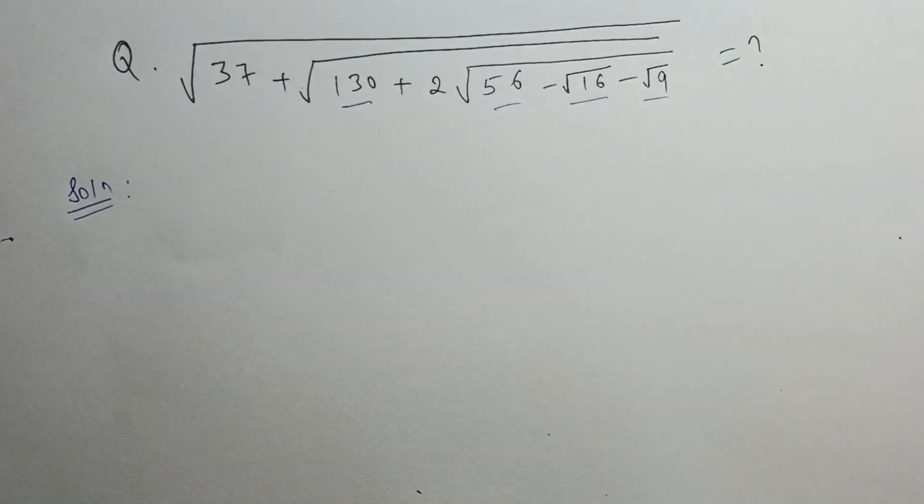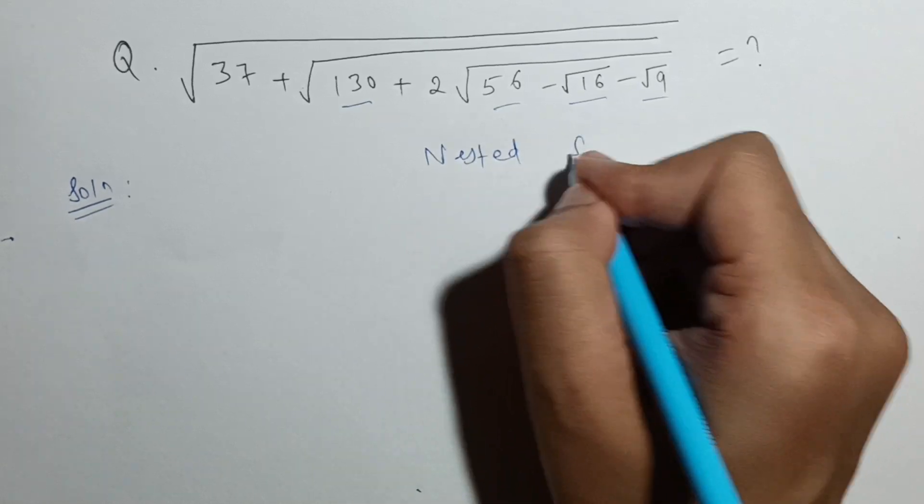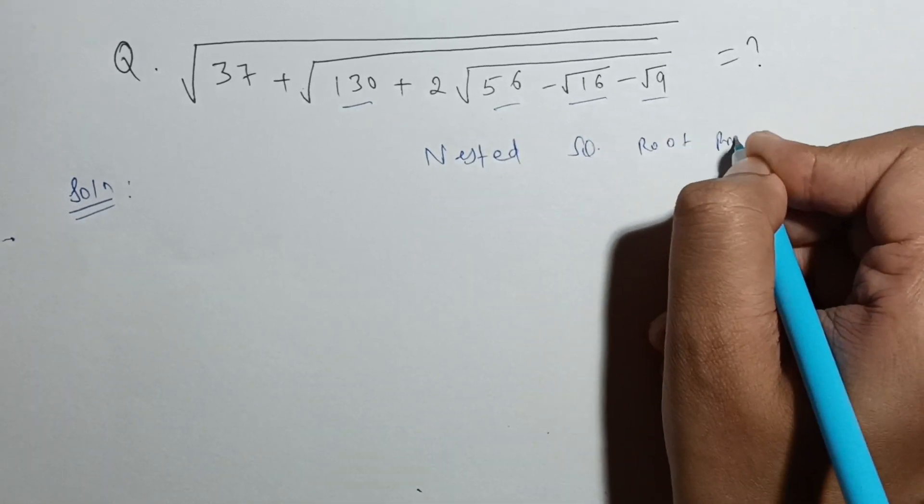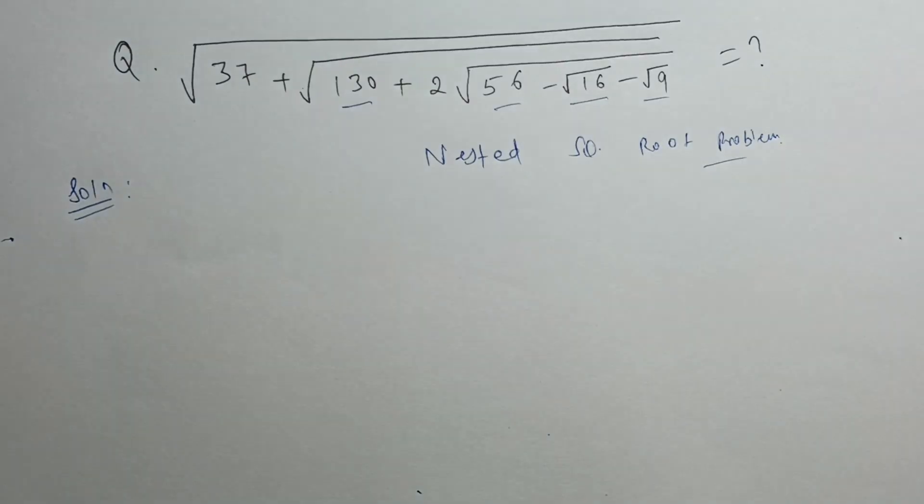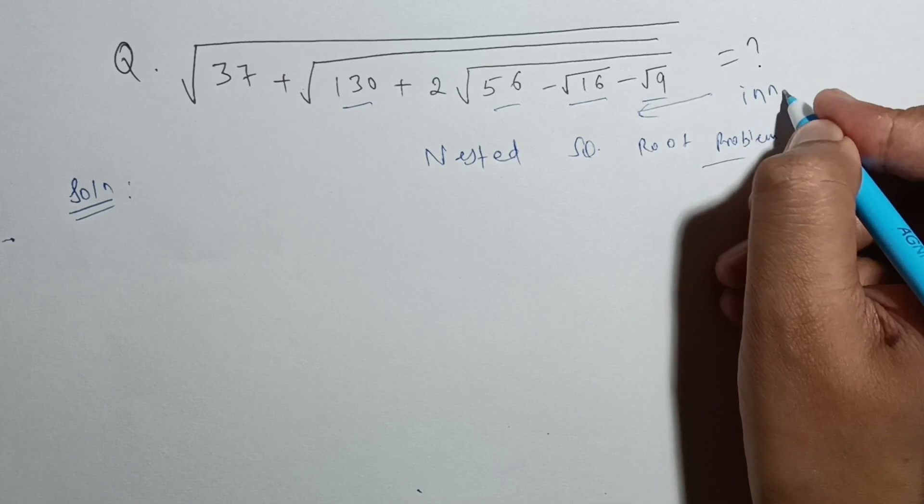Let us solve this question. In nested square root problems, we should always try to solve from the innermost side.